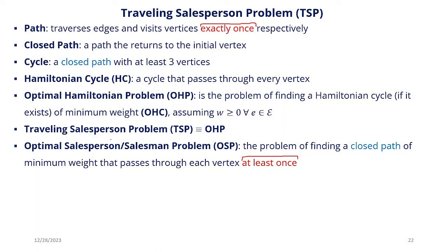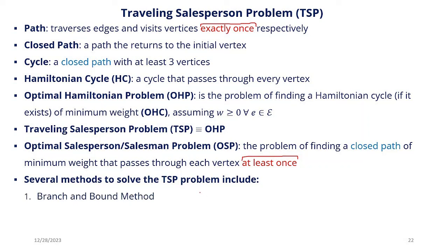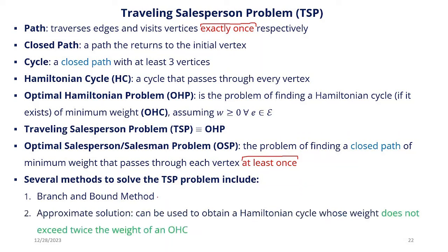The optimal Hamiltonian problem is the problem of finding a Hamiltonian cycle of minimum weight, if it exists, assuming all edge weights are positive. The Traveling Salesperson Problem becomes equivalent to the optimal Hamiltonian problem. The optimal salesperson problem is the problem of finding a closed path of minimum weight that passes through each vertex at least once — relaxing the 'exactly once' condition. Methods to solve the TSP include the branch-and-bound method (highly computational) and an approximate solution, which gives a Hamiltonian cycle whose weight does not exceed twice the weight of the optimal Hamiltonian cycle.